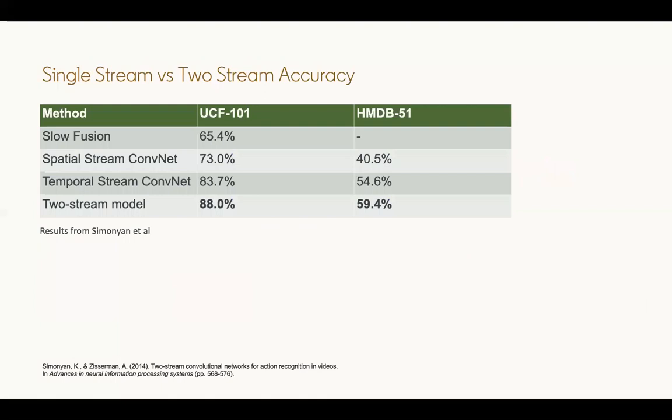In terms of results, two-stream network outperforms slow fusion considerably. The authors also tried out just a single spatial stream or just a temporal stream. Two-stream shows the utility of combining both streams together.